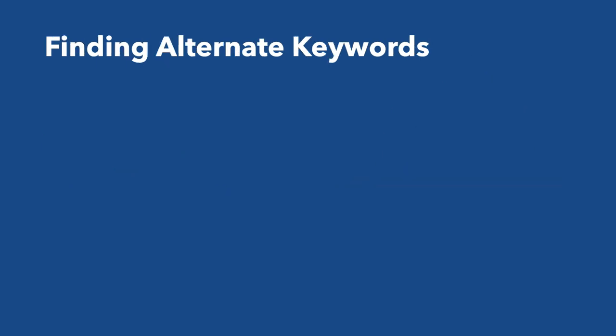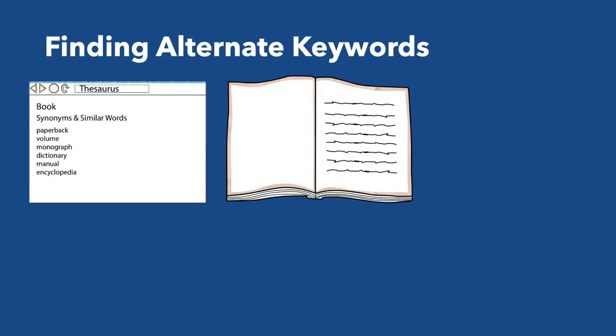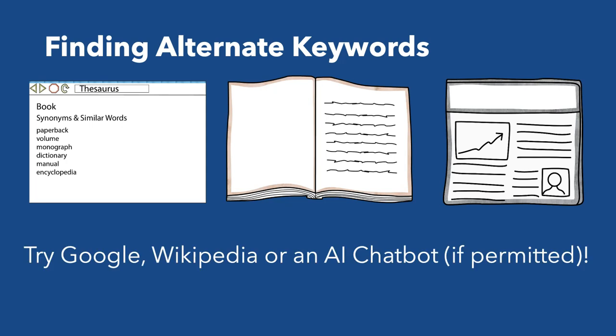Not sure what keywords or alternate keywords to use? Search a thesaurus, skim the table of contents in a book or textbook, or read the subjects and keywords in a relevant article. Google, Wikipedia, and even a generative AI tool can be helpful to generate ideas and keywords — just check with your professor to make sure it's okay.